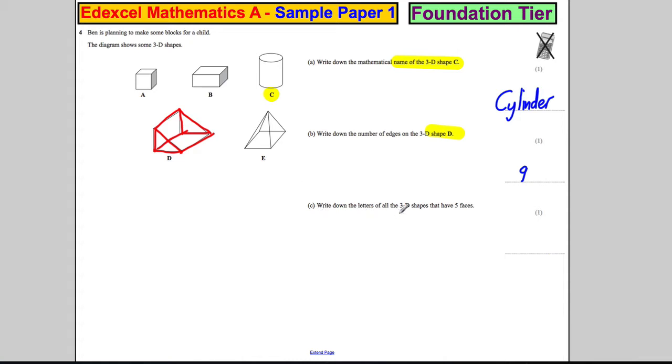Write down the letters of all the 3D shapes that have five faces. Now a face is something like that. A face is a flat side like that, okay? So which ones have five sides or five faces? Well, this one here has one here and one at the back. One here is three. One here is four. And this slanted one here would be five. So D is certainly one of them.